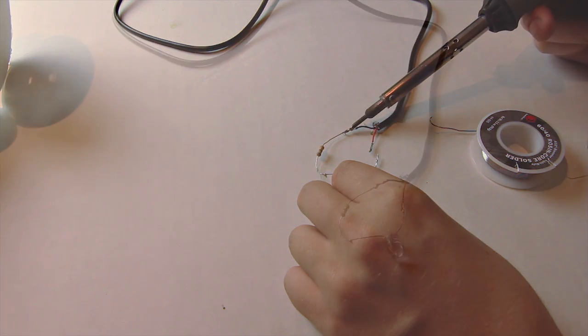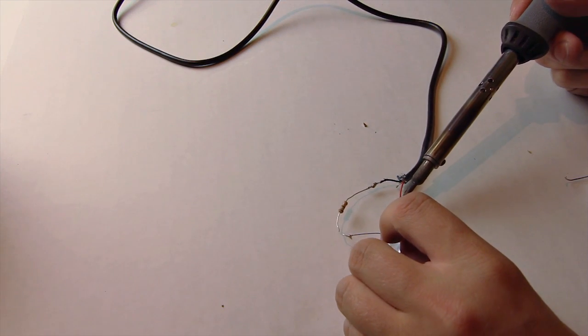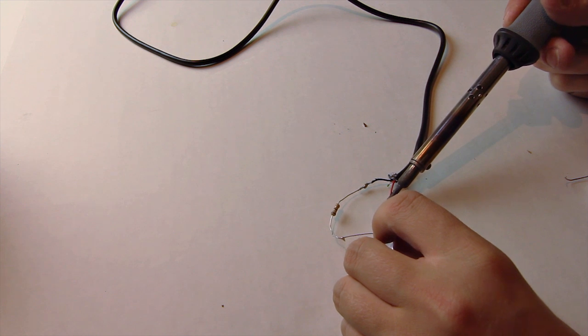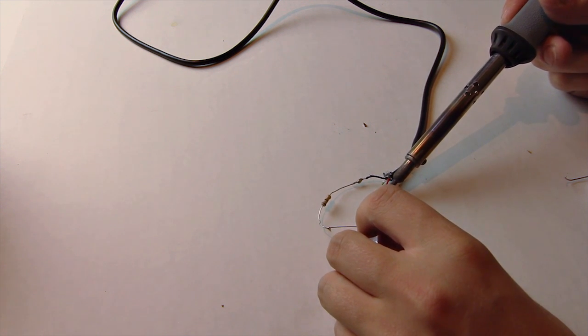We're going to hook up our negative wire, or the black one in this case, directly to the resistor as well, and then finally the positive end simply to the other part of the LED.